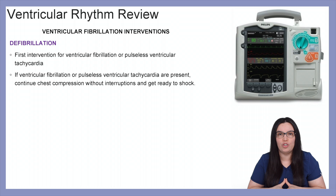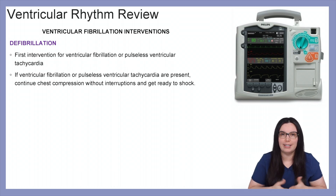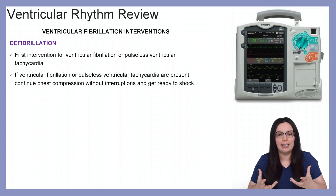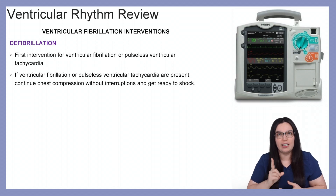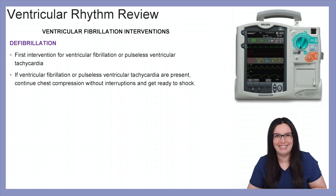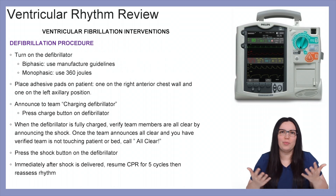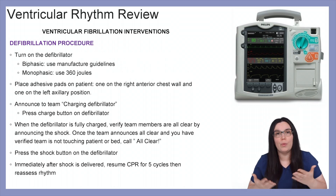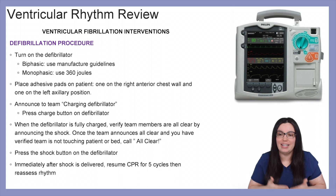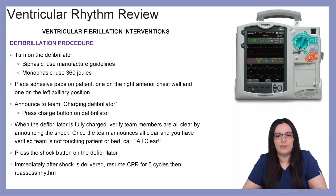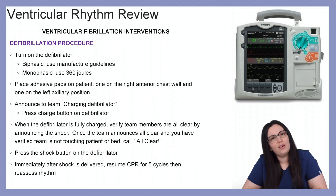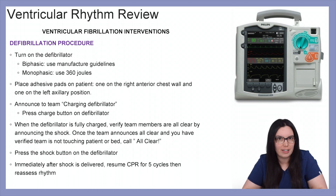If these two rhythms are present, just as we do with ACLS guidelines, we're going to continue chest compressions without interruptions and get ready to provide a shock. The first thing you want to do — with an AED or any defibrillator — is turn it on. With our biphasic defibrillators we use manufacturer guidelines, but with monophasic we want to use 360 joules.